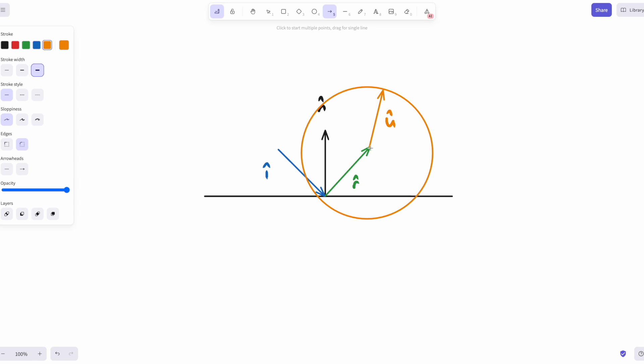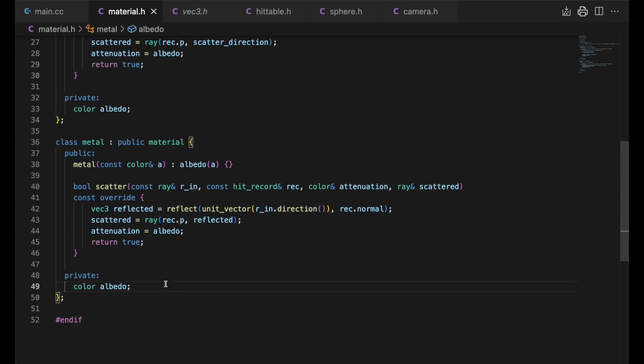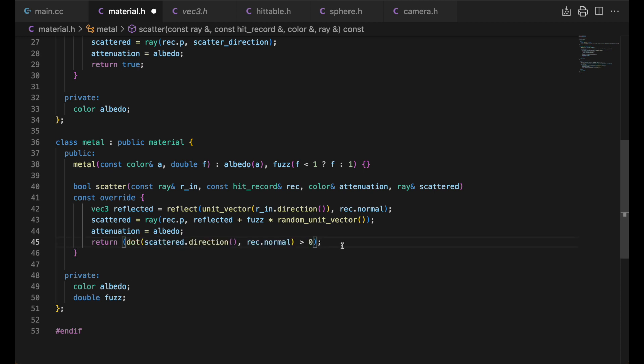This is why we normalize the incident ray, so we can have a normalized reflected ray to add this random fuzziness to. Note that if the sphere is big or at grazing angles, it could be possible that the reflected ray goes below the surface. When this happens, we say the ray was absorbed. We return the dot product of the reflected ray and the normal to determine if the ray is absorbed. We'll update the constructor of the metal material to take the fuzz factor and use it to determine the scattered ray. You can see where we return the dot product.